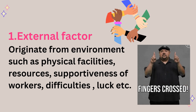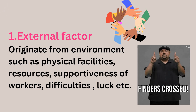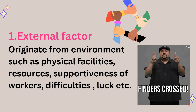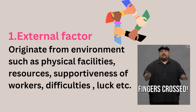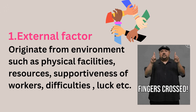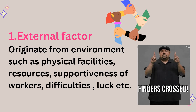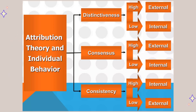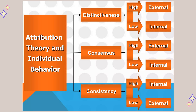External factors originate from the environment, such as physical facilities, resources, supportiveness of workers, difficulties, luck, etc. The elements of attribution theory are distinctiveness, consensus, and consistency.